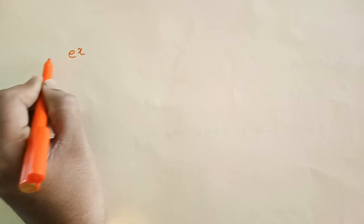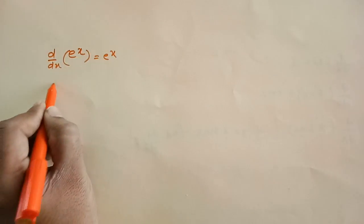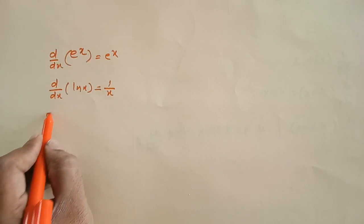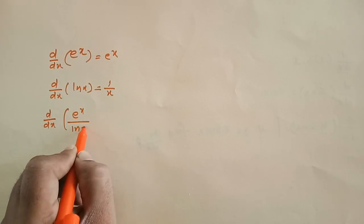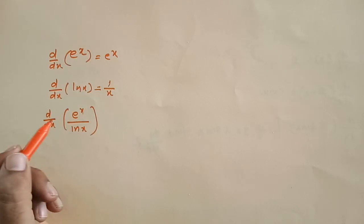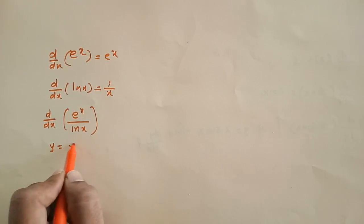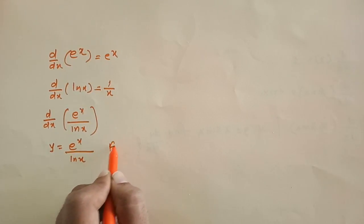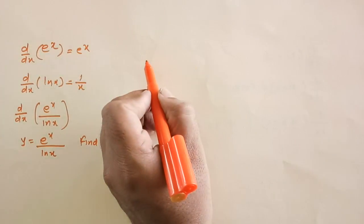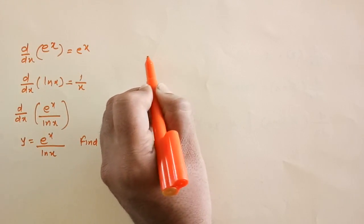This is a helpful video on the quotient rule. If you've been asked to differentiate e to the power x, the derivative is e to the power x. The derivative of ln x is 1 over x. But if you've been asked to differentiate e to the power x over ln x, how do we do this? In calculus, when you have division of two functions and want to find the derivative — for example, y equals e to the power x over ln x, find dy/dx — you use the quotient rule.